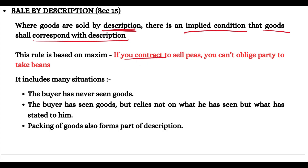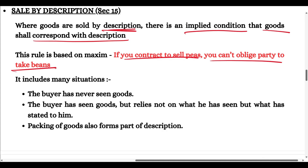This rule is based on the maxim that if you contract to sell peas you cannot ask the other party to take beans — you have to give peas. If you are selling something, then you must give that exact thing to the buyer and not something else.